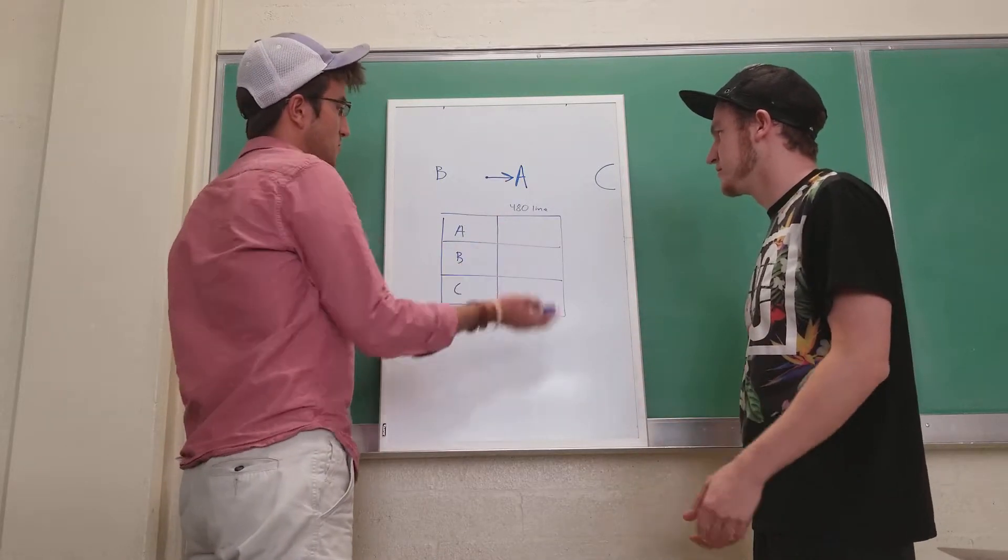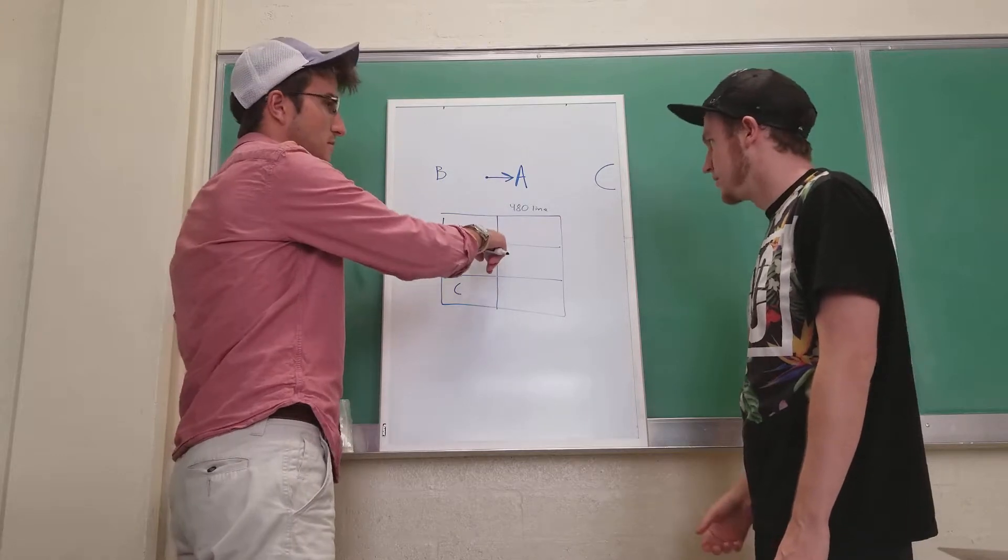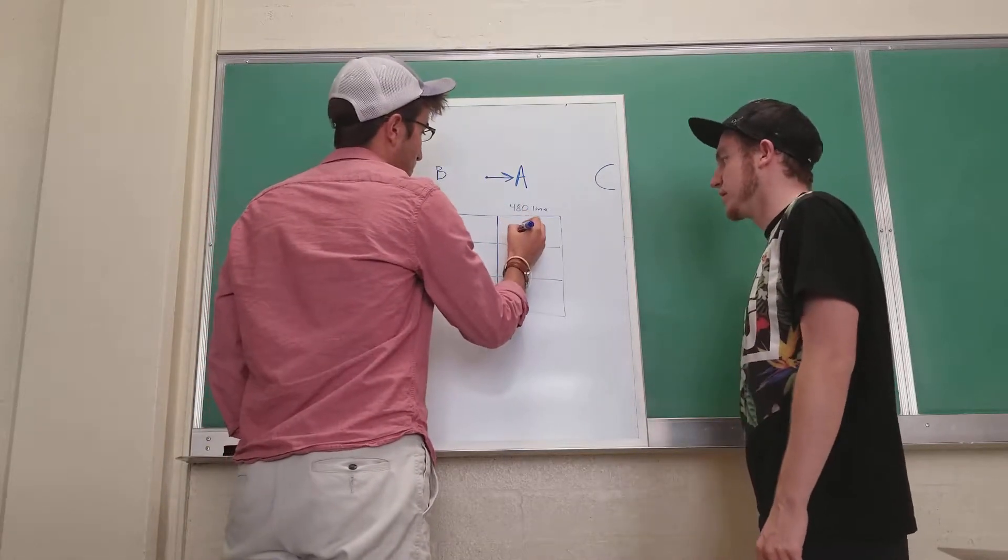So we could say, since it's blue shifted, it'll go to a smaller number. So it's just 470. That's a small little shift.